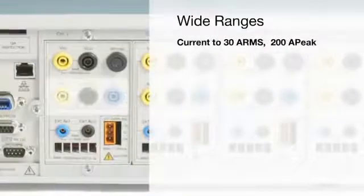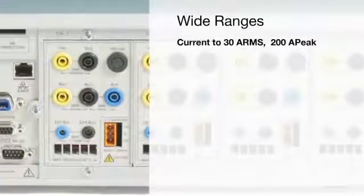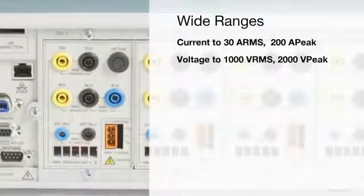Each channel includes two high-performance current shunts, one for measuring below 1 amp and one for measuring up to 30 amps.